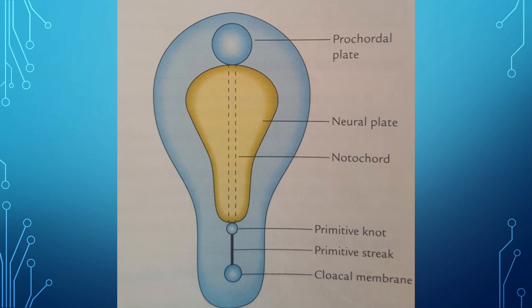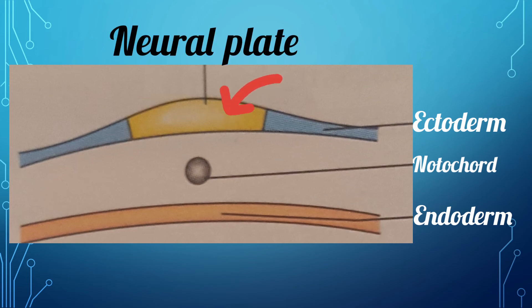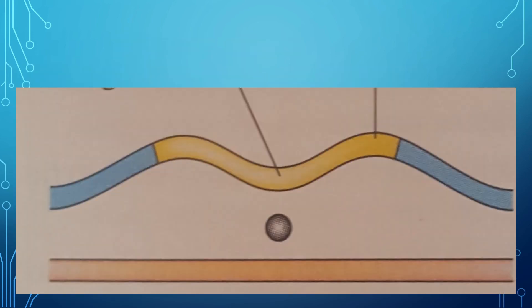The ectodermal cells which are lying above the notochord get differentiated into specialized cells called neuroectodermal cells. These neuroectodermal cells proliferate to form a thick plate called neural plate. The margins of this neural plate get elevated due to the proliferation of the underlying mesoderm and this leads to the formation of neural groove and neural folds.